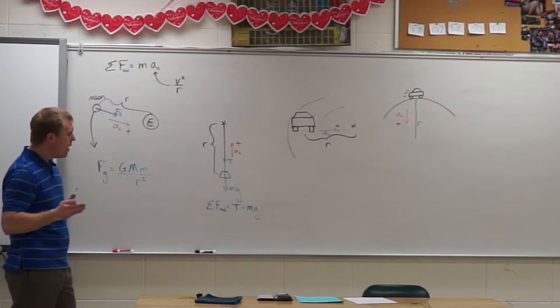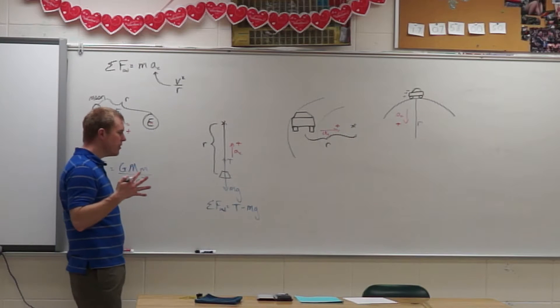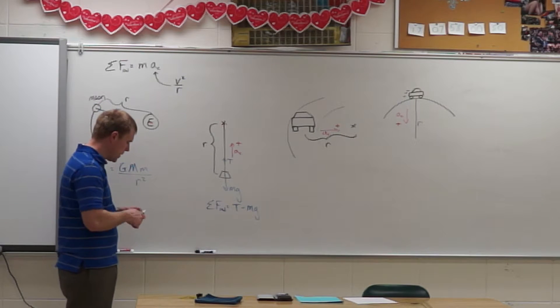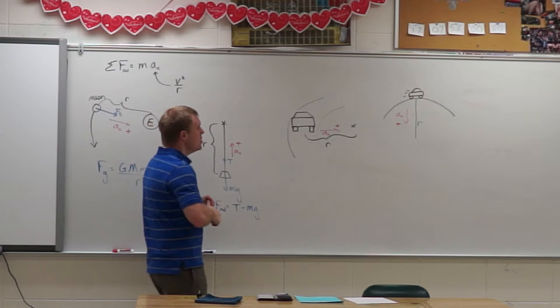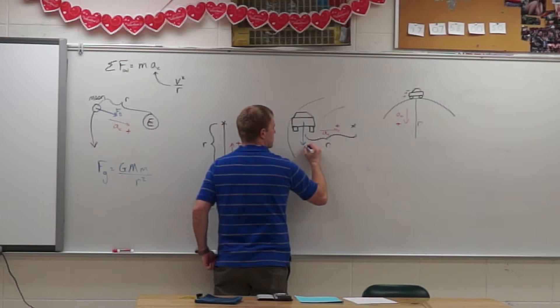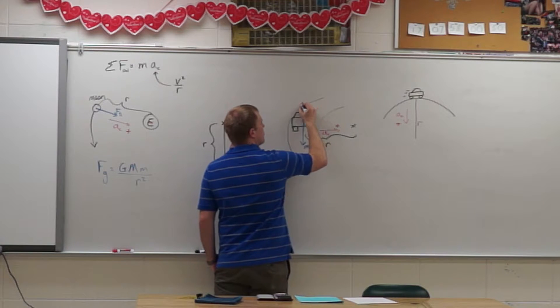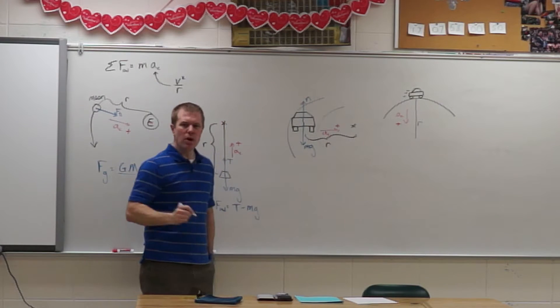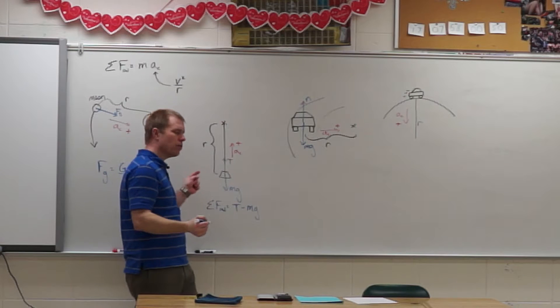Now what happens if there is a force that's not in the radial direction? Let's see what happens. So now I got a car going around a corner. I got gravity acting straight down, there's a normal force acting up. And what force is causing that car to go around the corner?